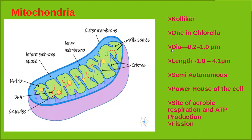The number of mitochondria in a cell is actually variable depending on the physiological activity of the cell. For example, a single-celled algae called Chlorella has only one mitochondria. Mitochondria have a diameter of 0.2 to 1 micrometer and a length of 1 to 4.1 micrometers.